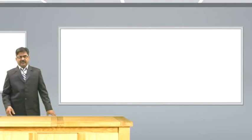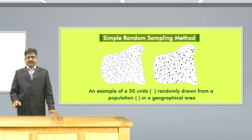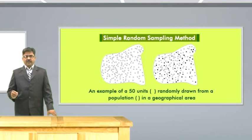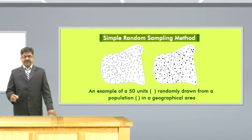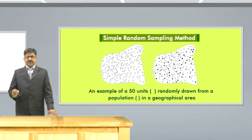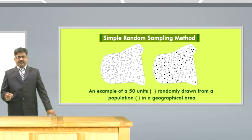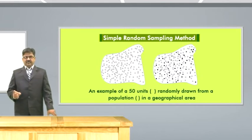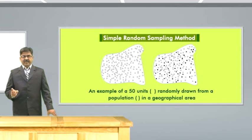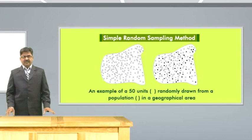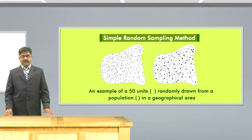Now, let us come to probability sampling. Basically, there are four types of probability sampling methods commonly used by researchers: simple random sampling, stratified random sampling, cluster sampling, and systematic sampling. In case of all types of probability sampling methods, the degree and direction of error can be measured and the statistics that measure the precision of estimates can be easily calculated. Please note that the simple random sampling method is the foundation for all the probability sampling methods.